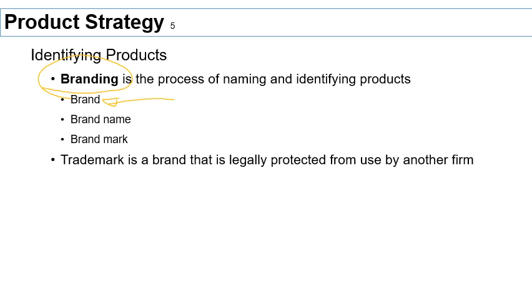How do you choose a brand name? There is a lot that goes into this. First, the name has to be unique — nobody has already used exactly the same name — and you have to do a legal search to make sure you can trademark your brand. This is different in different countries, so if you are late to the market in some countries, you might have to switch your name.